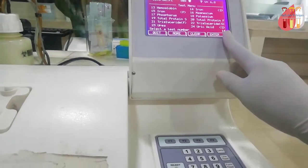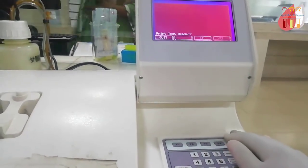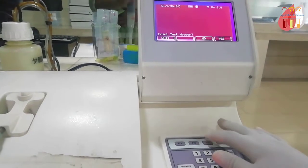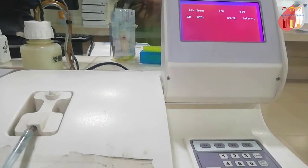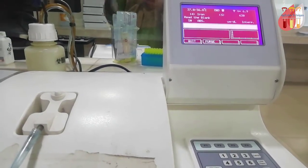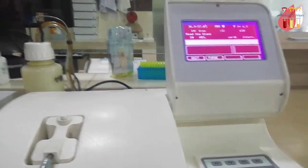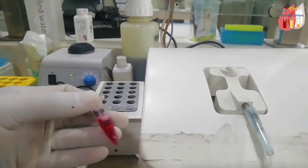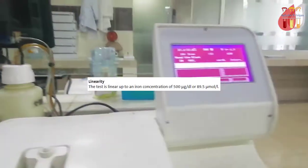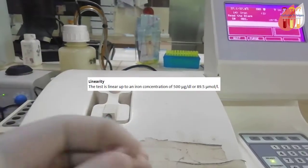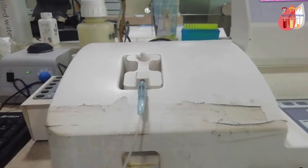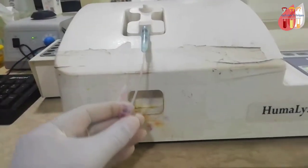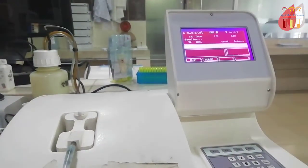First, set the program on the semi-auto biochemistry analyzer with wavelength filter 546nm, standard 100 micrograms per deciliter, normal range for male 69-178 and female 36-154 micrograms per deciliter.